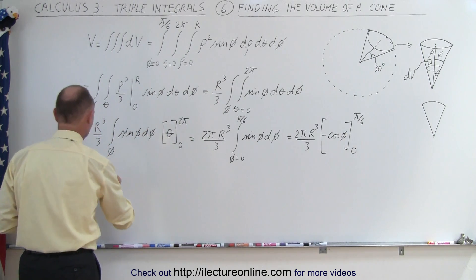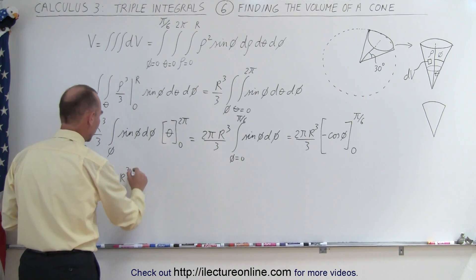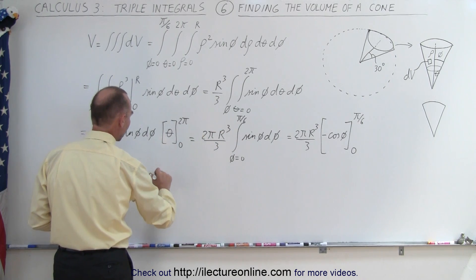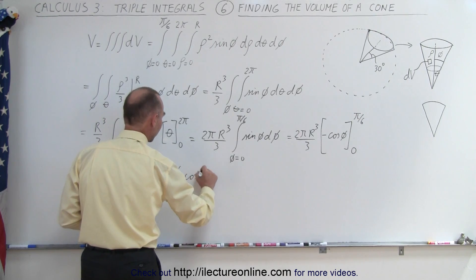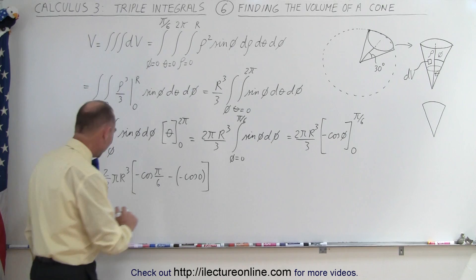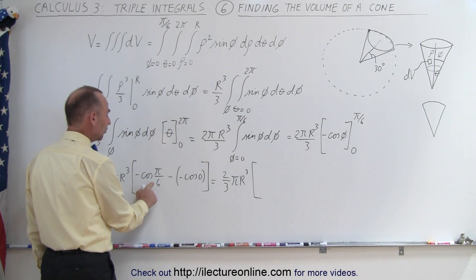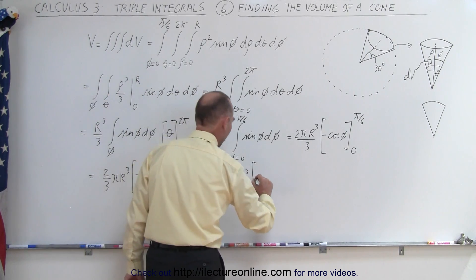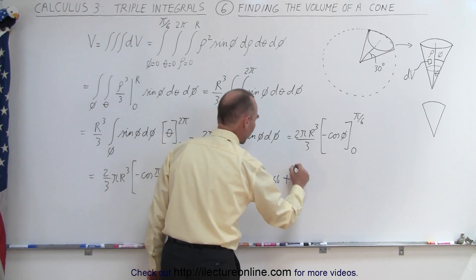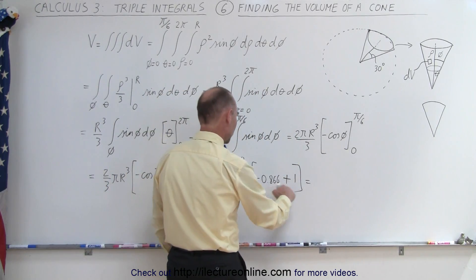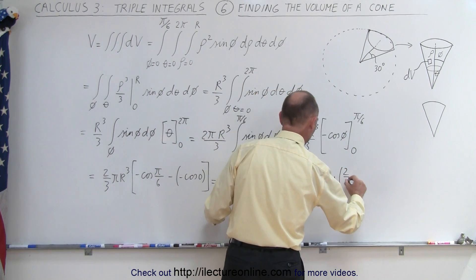Now if we plug the values in: this equals two-thirds pi r cubed — which is basically half a sphere's volume — times the evaluated bracket. Plugging in the upper limit gives minus cosine of pi over six, which is 30 degrees; and from that we subtract the negative cosine of zero. The cosine of 30 degrees is 0.866, so we have minus 0.866. The double negative makes the cosine of zero — which is one — positive. When we subtract the two, we get 0.134, so the result is 0.134 times two-thirds pi r cubed.